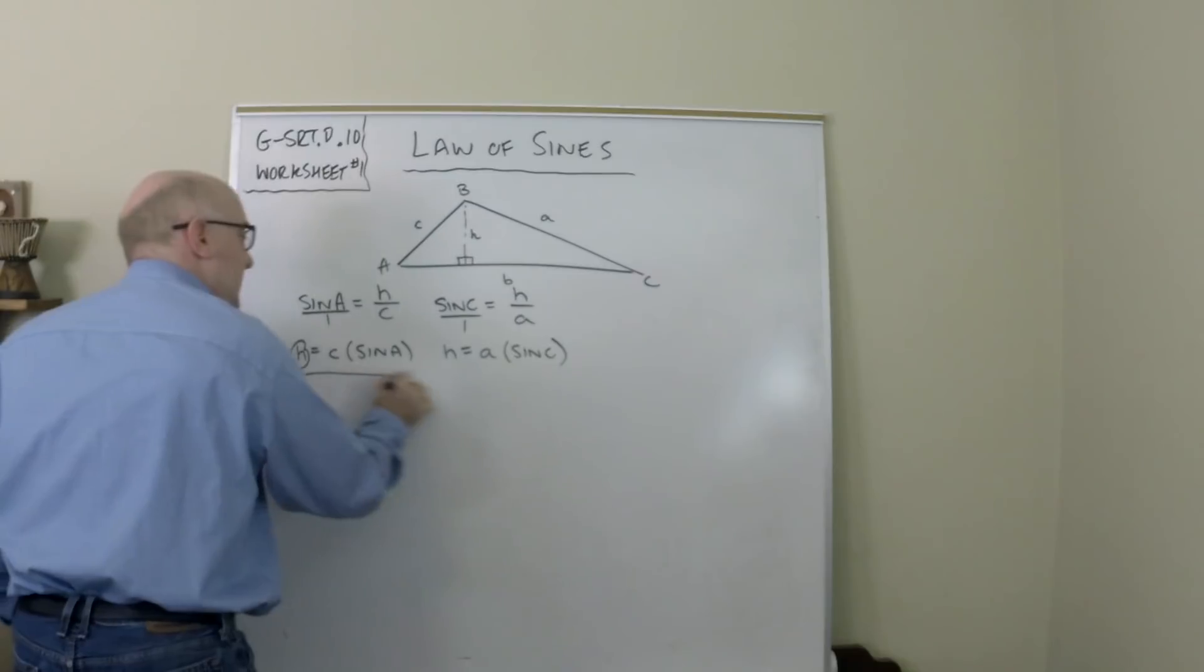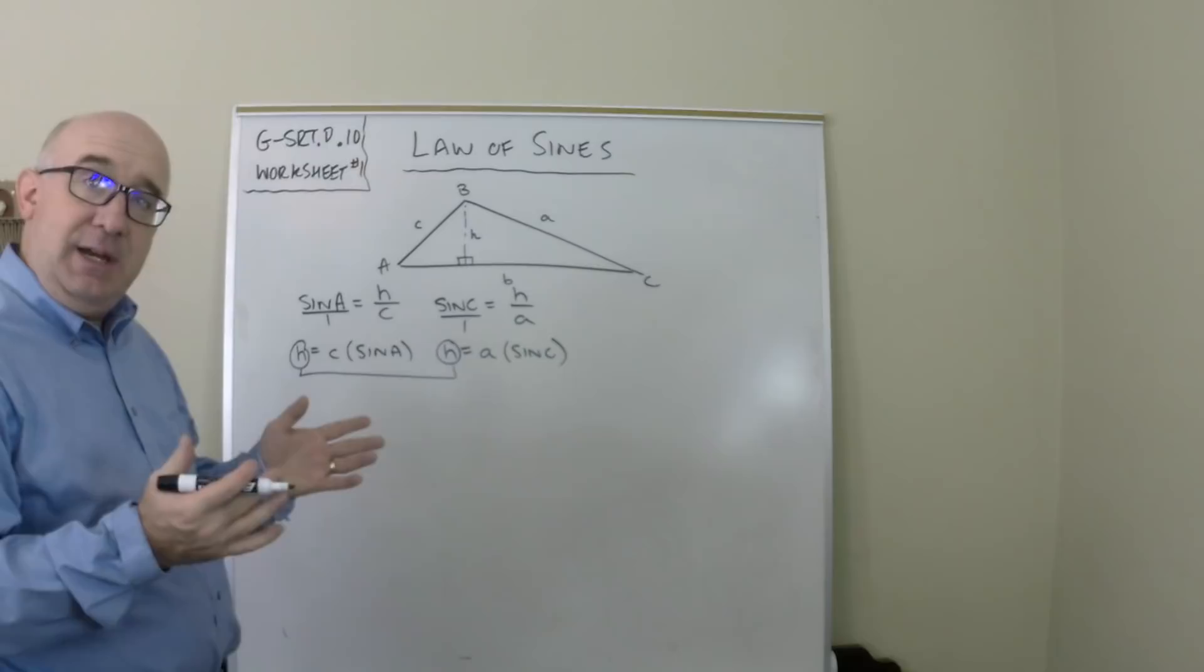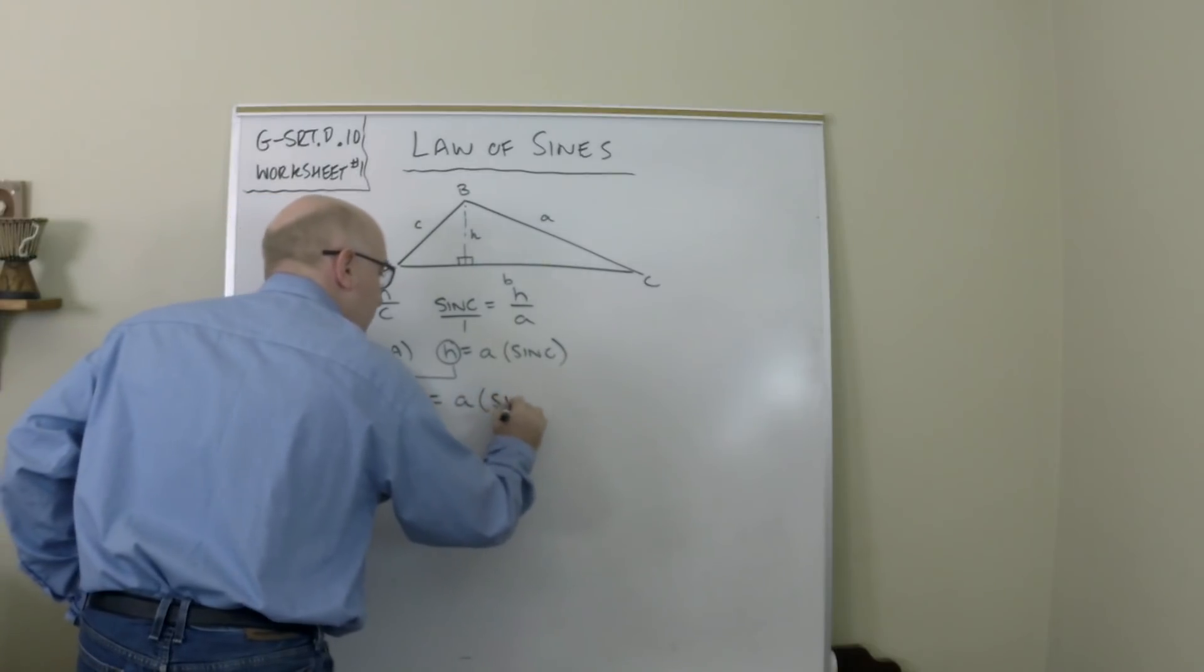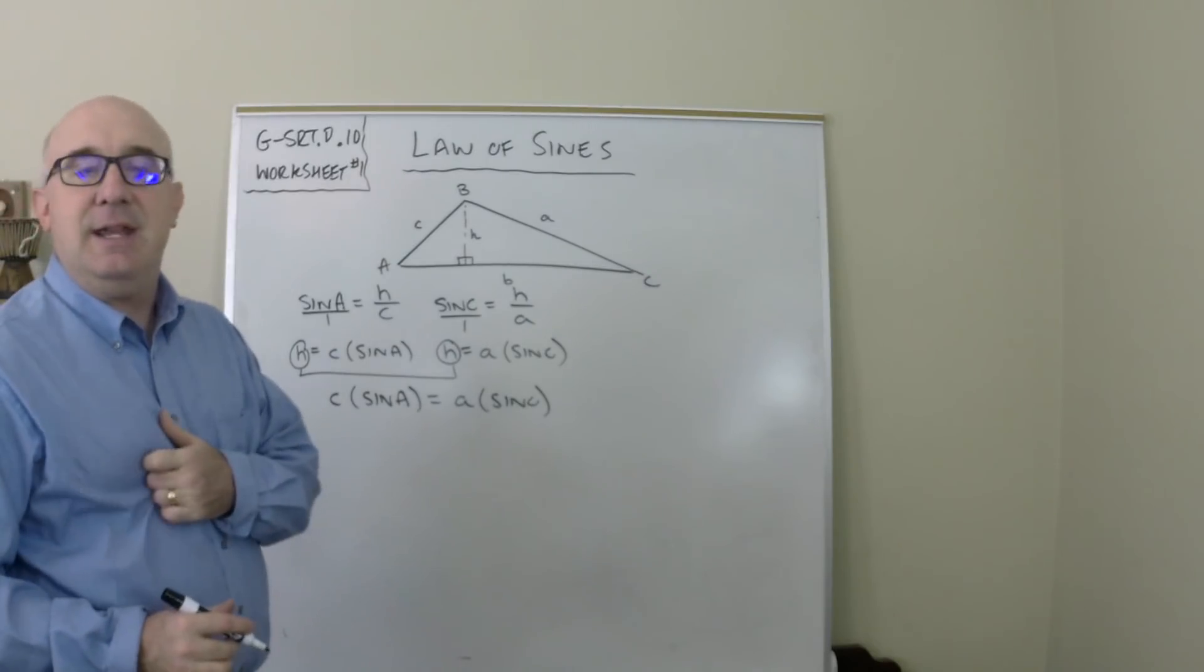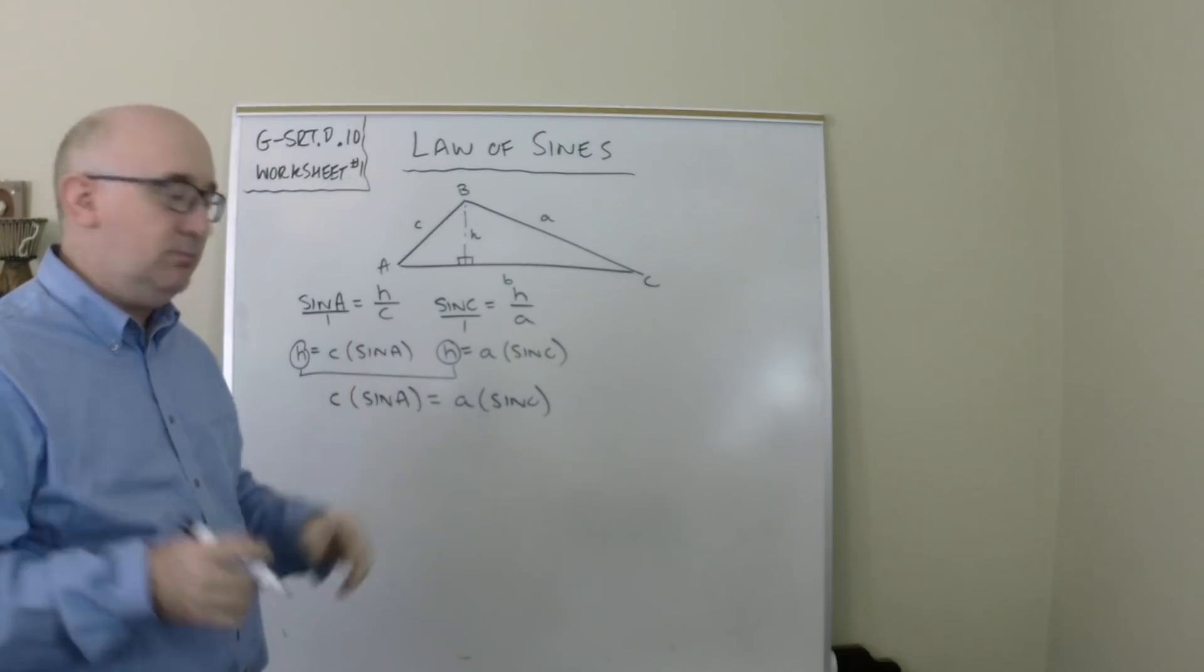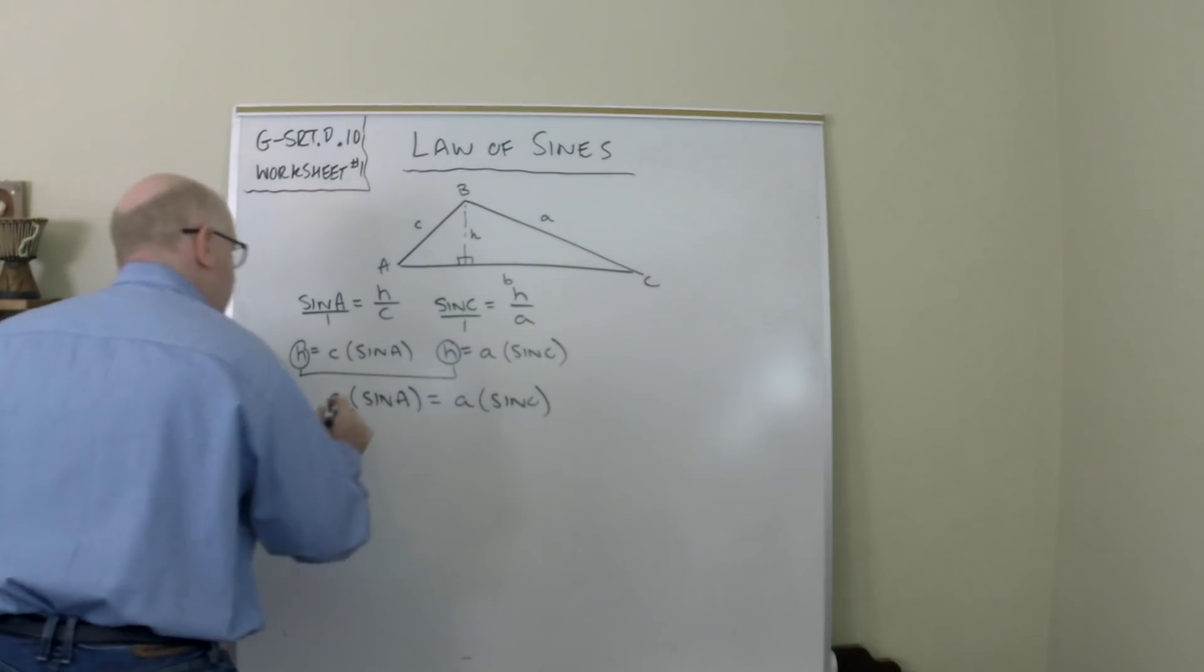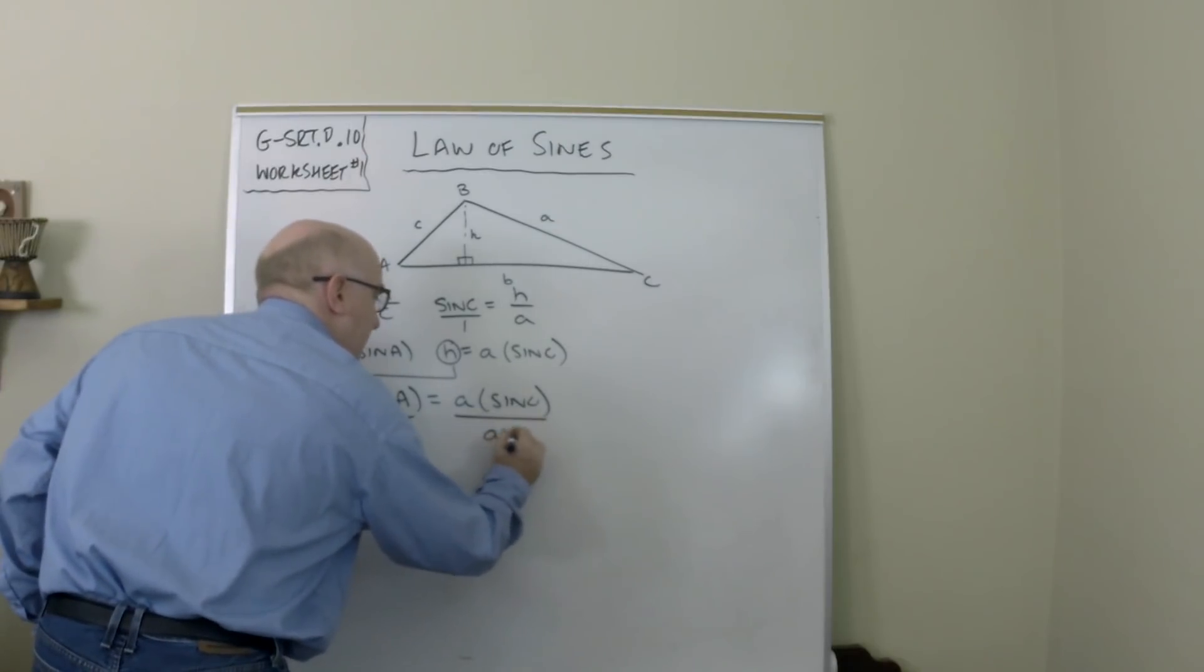Now you'll notice they're both looking at the same H, and so then obviously they can be equated to each other. C sine of A equals A sine of C. Now the law of sines, which we're about to derive, is usually written as two ratios or a proportion. And so I'm going to divide both sides by C and both sides by A. And in doing so, when we divide by A and C, you watch what will happen.